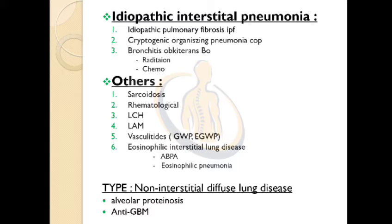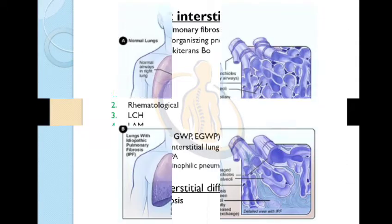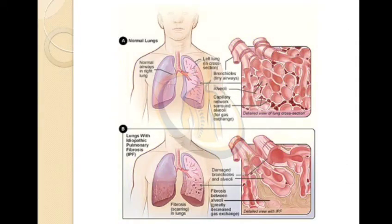The second type is non-interstitial diffuse lung diseases, which include two types: alveolar proteinosis and anti-GBM disease. We can see the difference between a normal lung and the lung with idiopathic pulmonary fibrosis through this image.